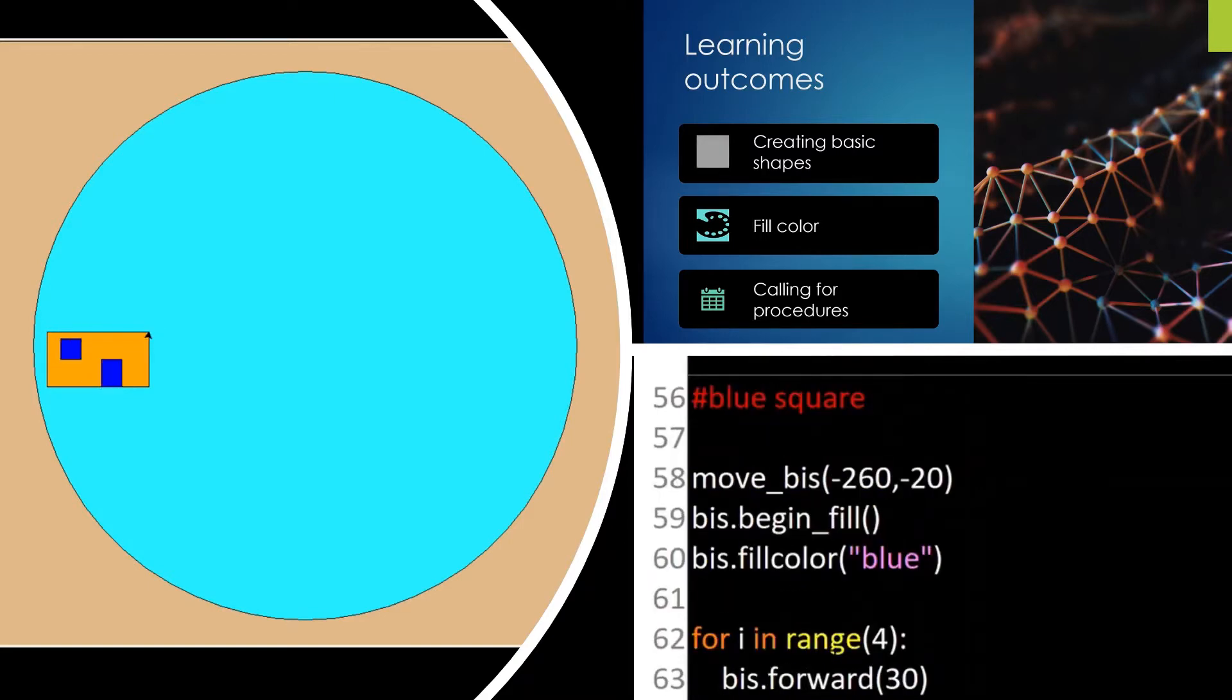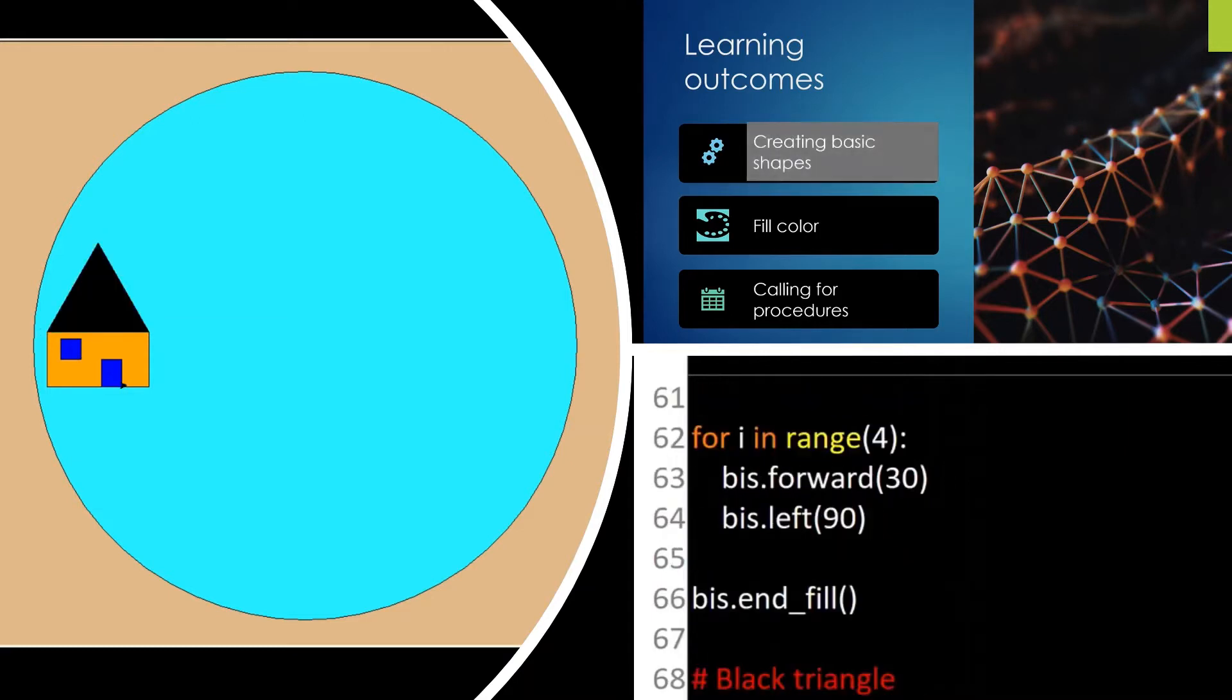Then we use a small for loop to draw the black triangle. Secondly, the second house.